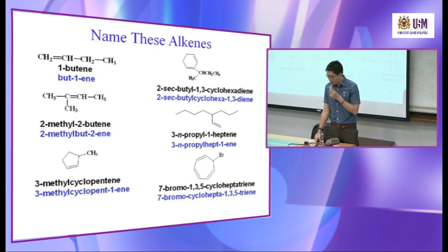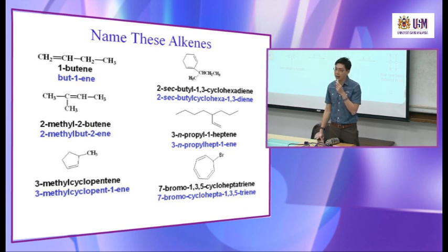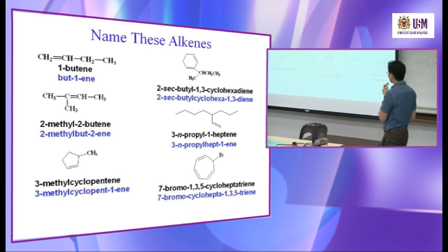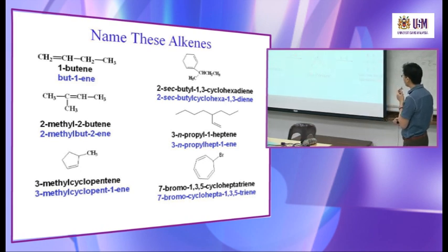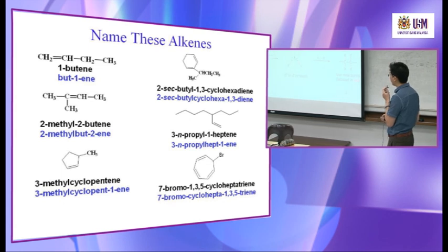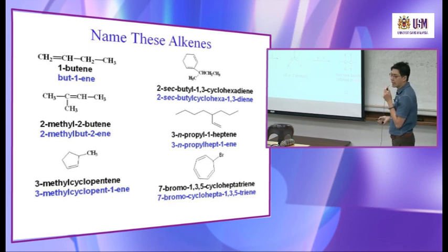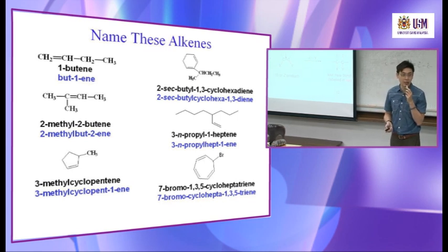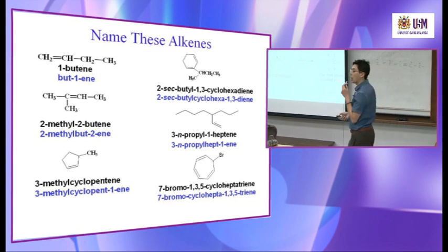Two sequential reactions can take place: first, addition of one equivalent of reagent to alkyne forms an alkene. For example, alkyne reacts with HX to add one equivalent. Then a second equivalent of reagent adds to the alkene to yield a product with four new bonds. The first step can produce E or Z product; after the second addition, you get a product with four bonds highlighted.